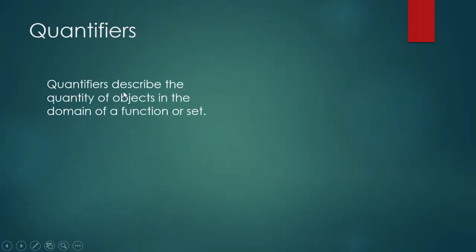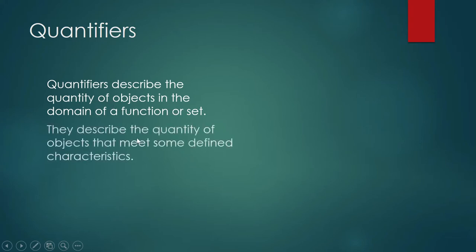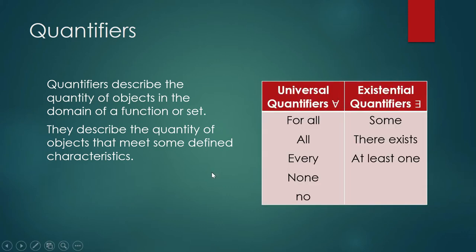What are quantifiers? Quantifiers describe the quantity of objects in the domain of a function or a set — they describe the quantity of objects that meet some defined characteristics. When they are describing the quantity, they are not telling you exactly how many there are. These quantifiers are like adjectives that describe the size or quantity of something, but not by stating exactly how many elements there are.